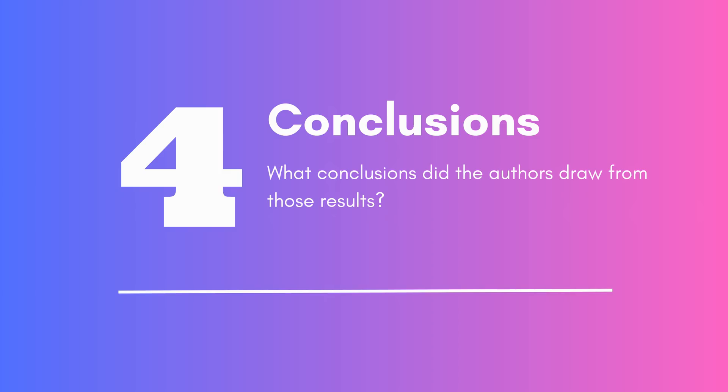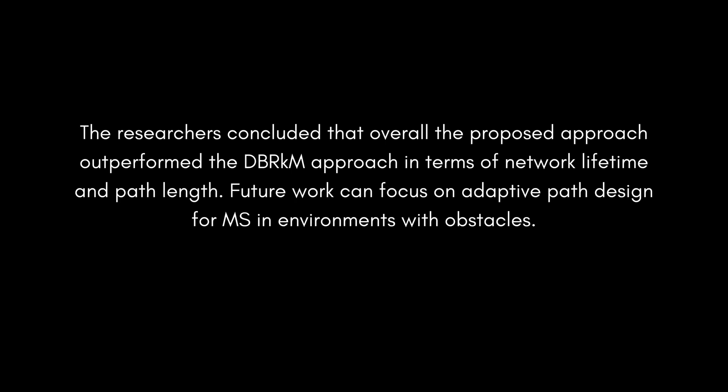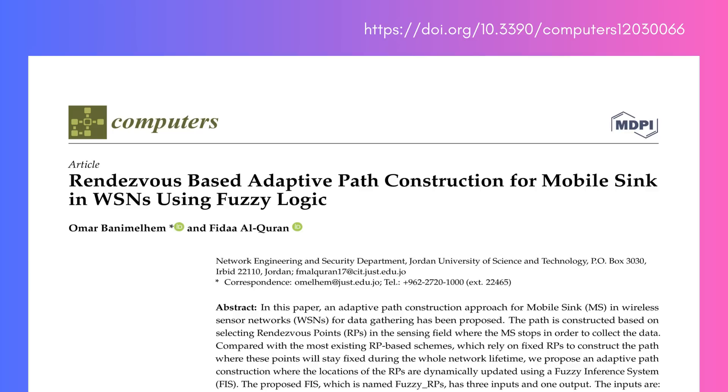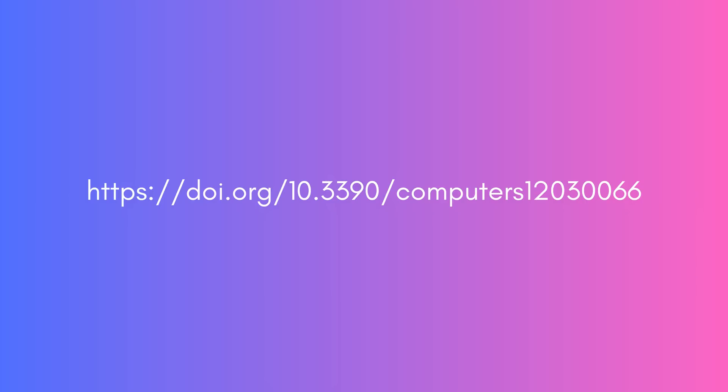The researchers concluded that the proposed approach outperformed the DBRKM approach in terms of network lifetime and path length. Future work can focus on adaptive path design for mobile syncs in environments with obstacles. This research is important because it provides a more effective approach for data gathering in WSNs, which can lead to more efficient and reliable sensor network applications. If you'd like to read the full paper, you can find it at DOI 10.3390/computers12030066.